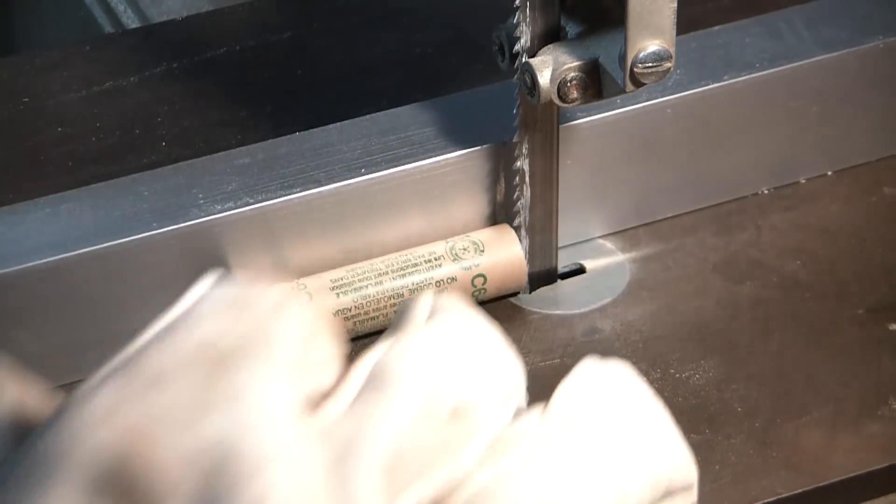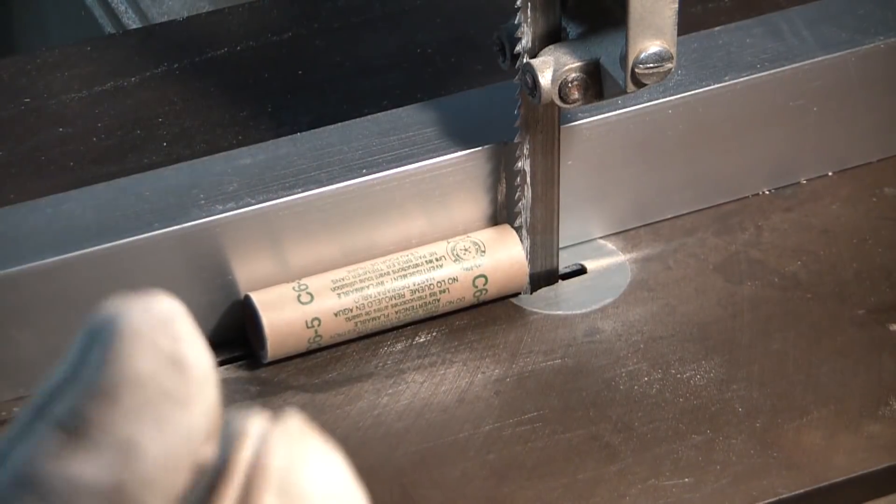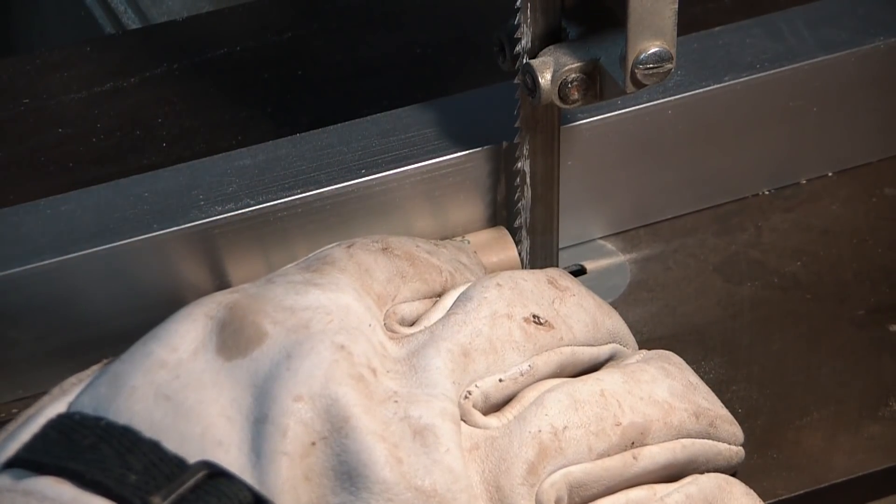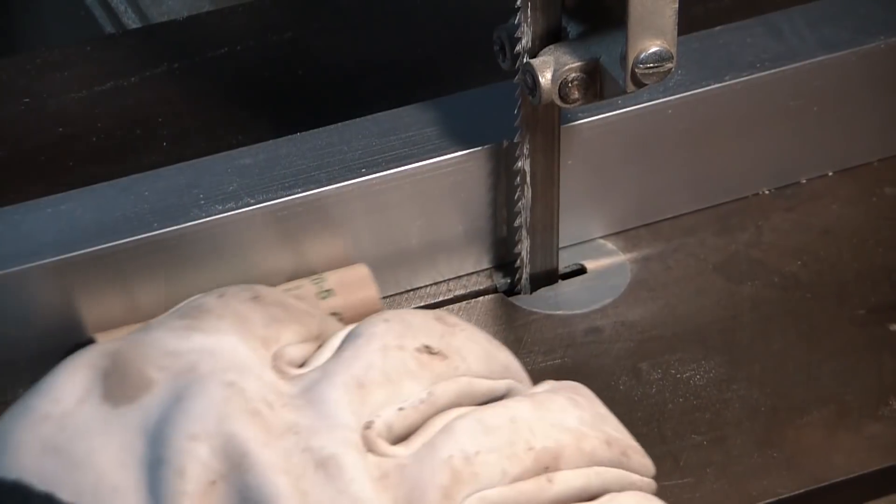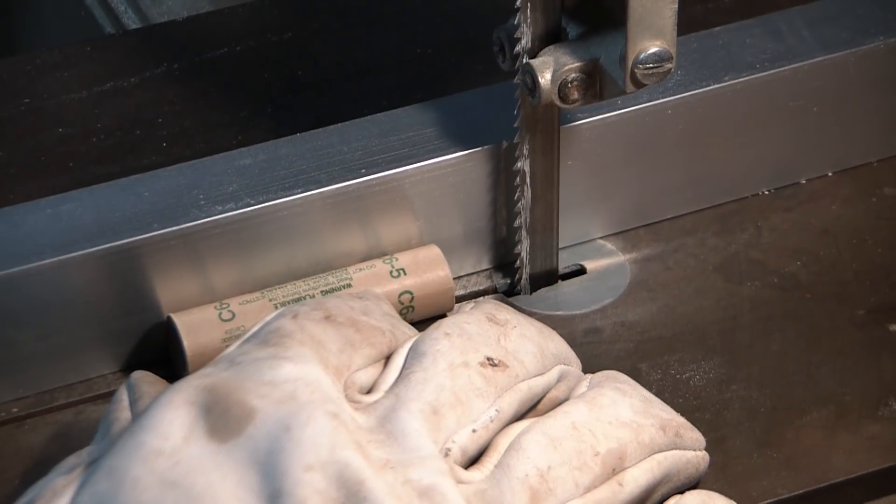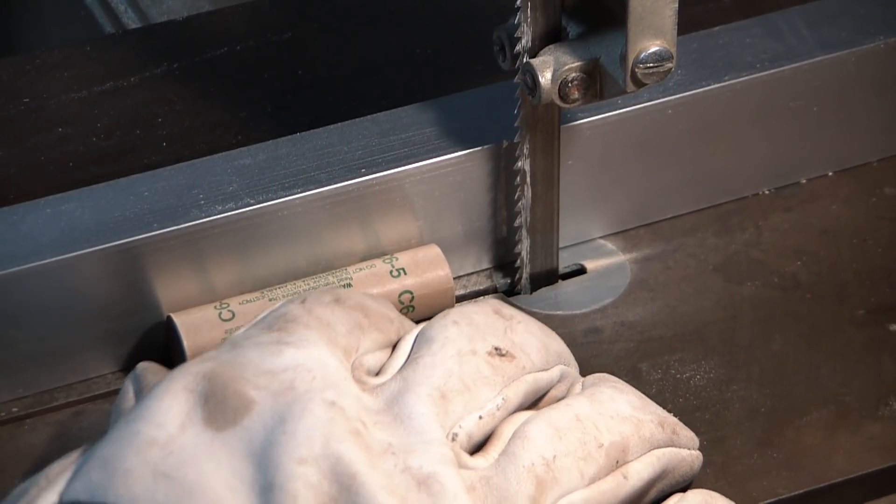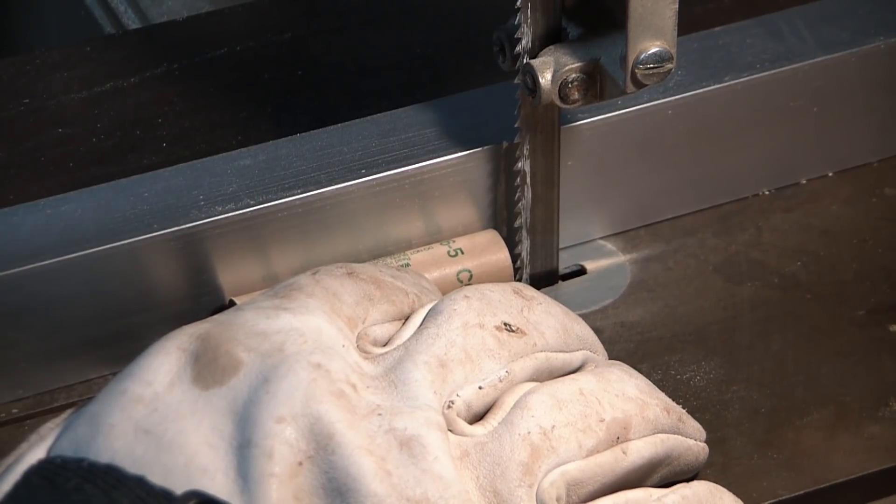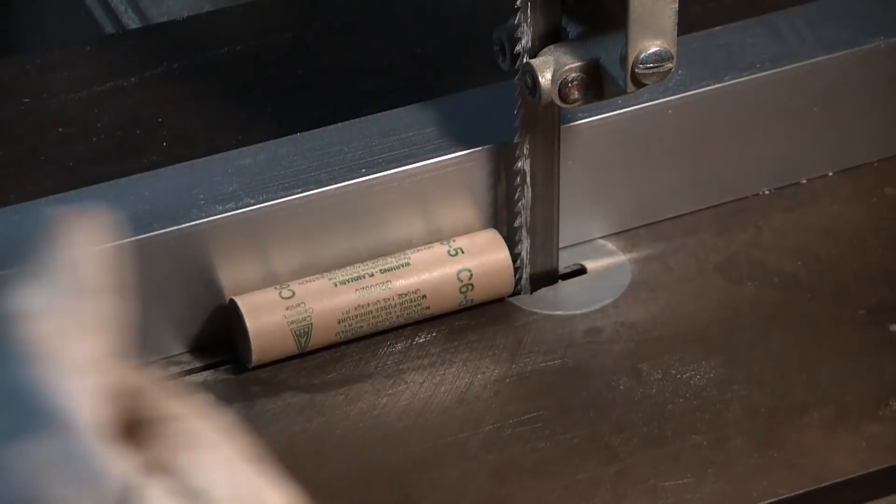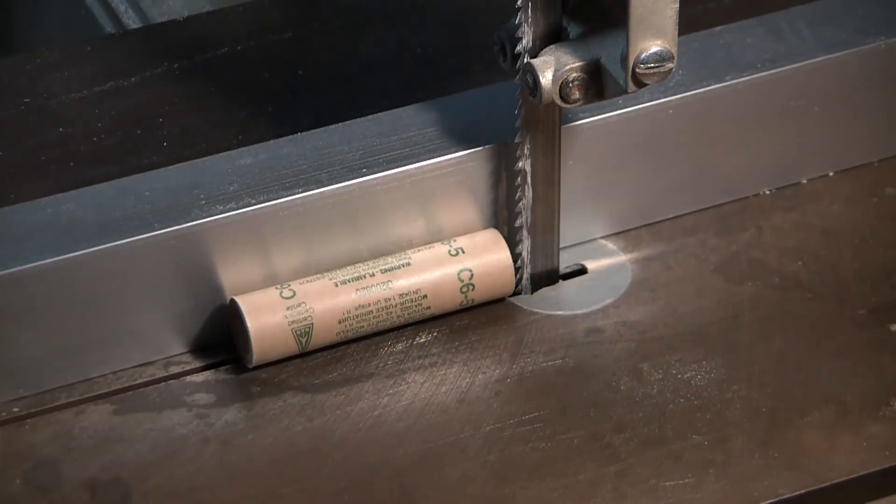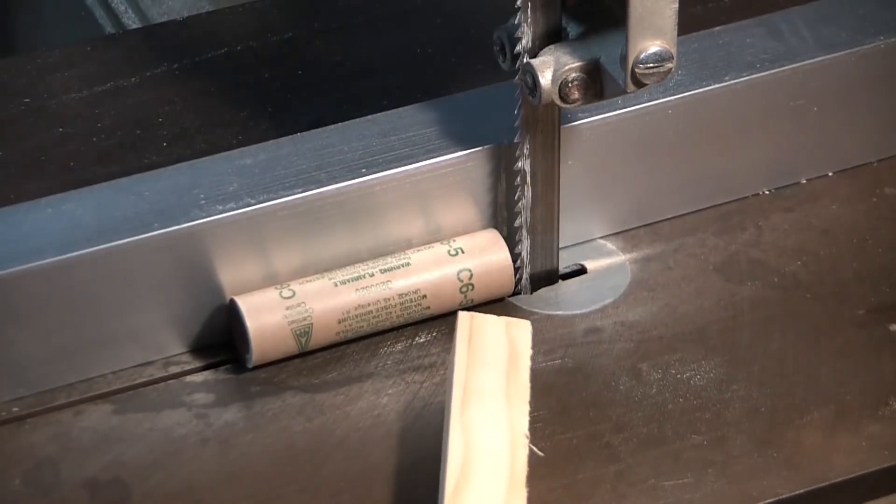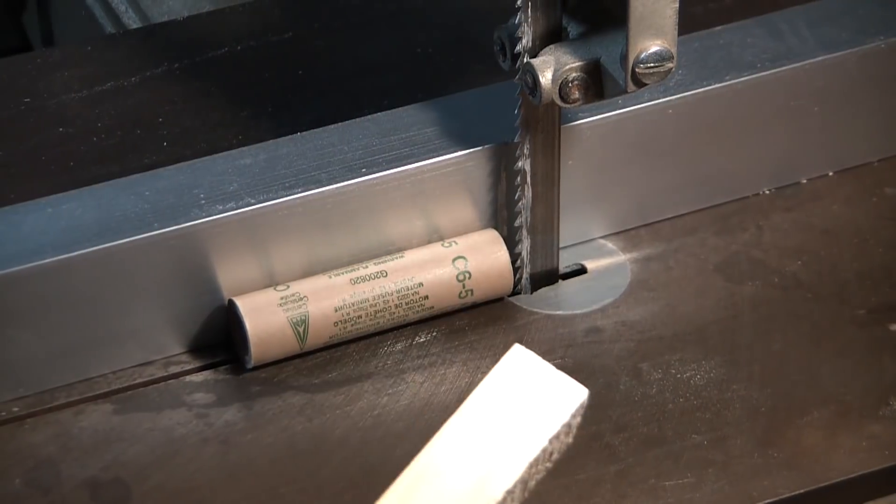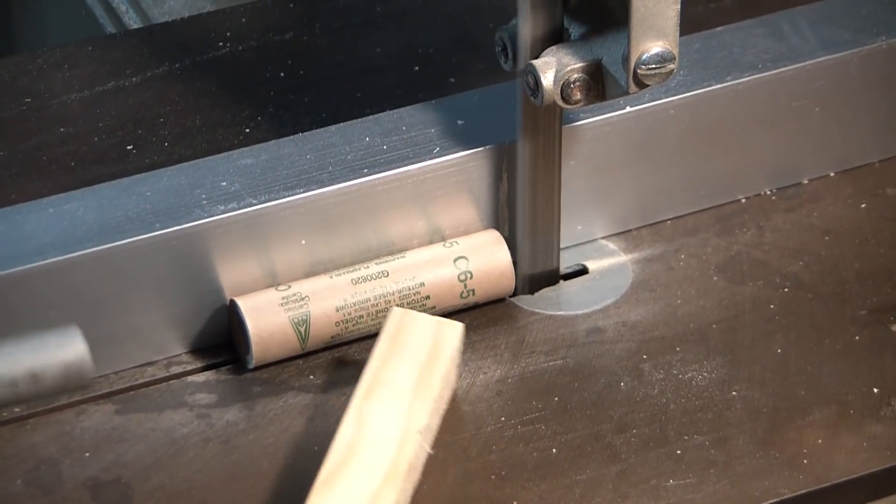All right guys, again this is incredibly dumb. Please do not ever attempt this. Genuinely don't even know which way to do it. I guess we'll drill through the burst charge first. That way if that pops, it'll just end grain burn, should be a little safer. All right, gonna use this. Let's do it.